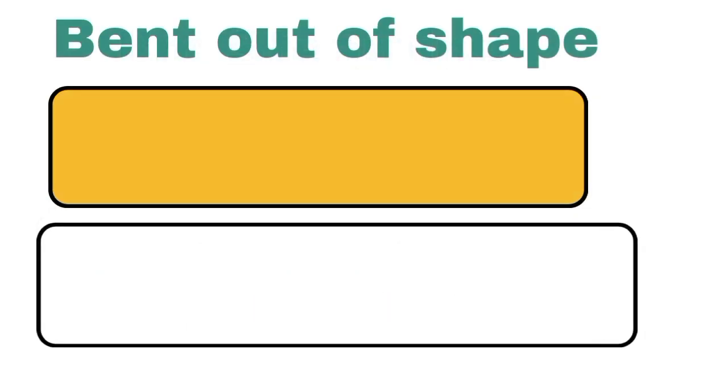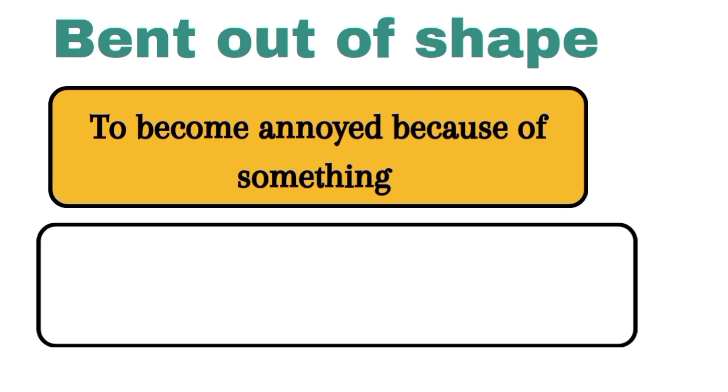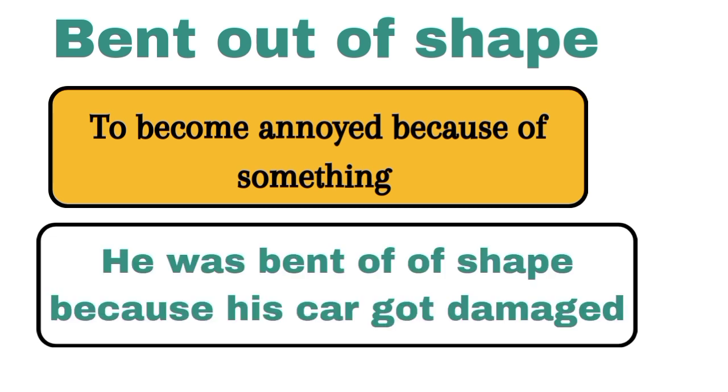Bent out of shape means to become annoyed because of something in particular, something that makes you irritated. For example, he was bent out of shape because his car got damaged.